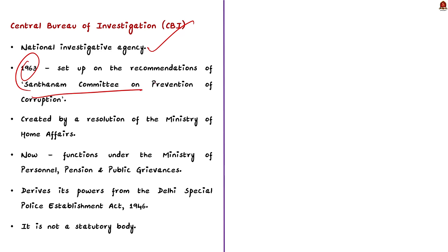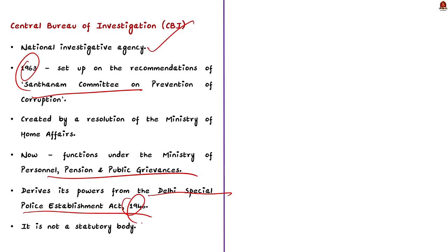The Central Bureau of Investigation or CBI is one of the national investigative agencies in India. It was set up in 1963 based on the recommendation of the Santhanam Committee on Prevention of Corruption, created by a resolution of the Ministry of Home Affairs. Initially it functioned under the Home Ministry, but was later transferred to the Ministry of Personnel, Pension and Public Grievances. Note that the CBI derives its power from the Delhi Special Police Establishment Act 1946 but is not a body created under such an act — so the CBI is not a statutory body.